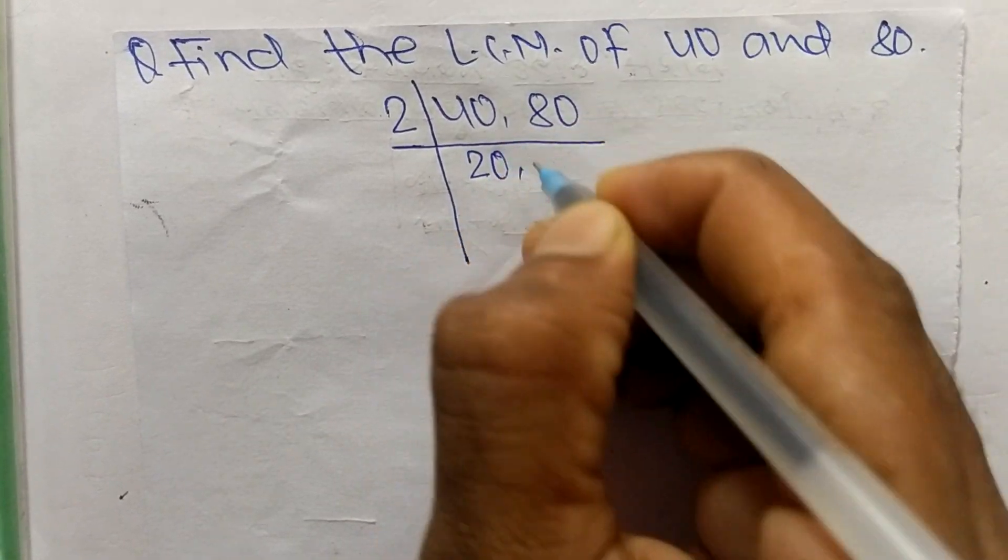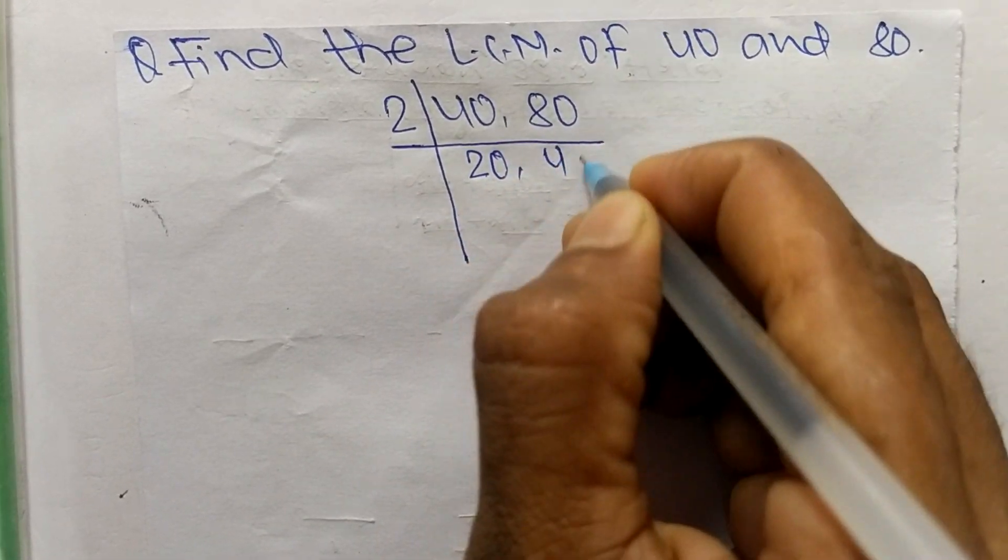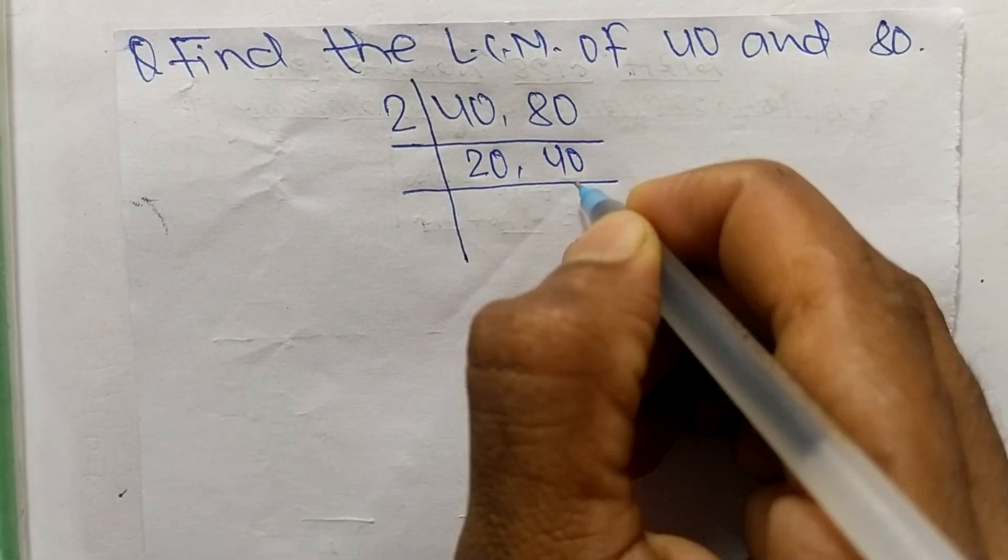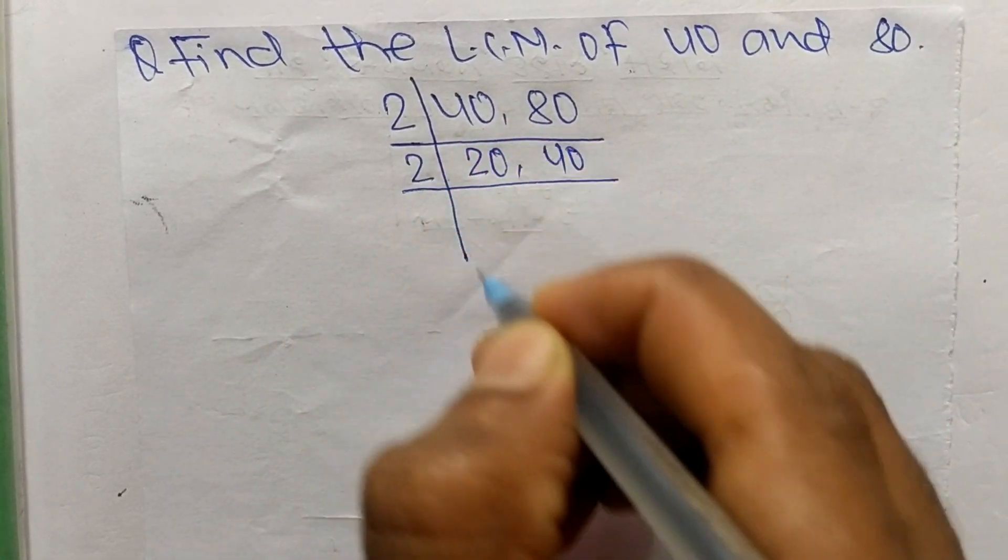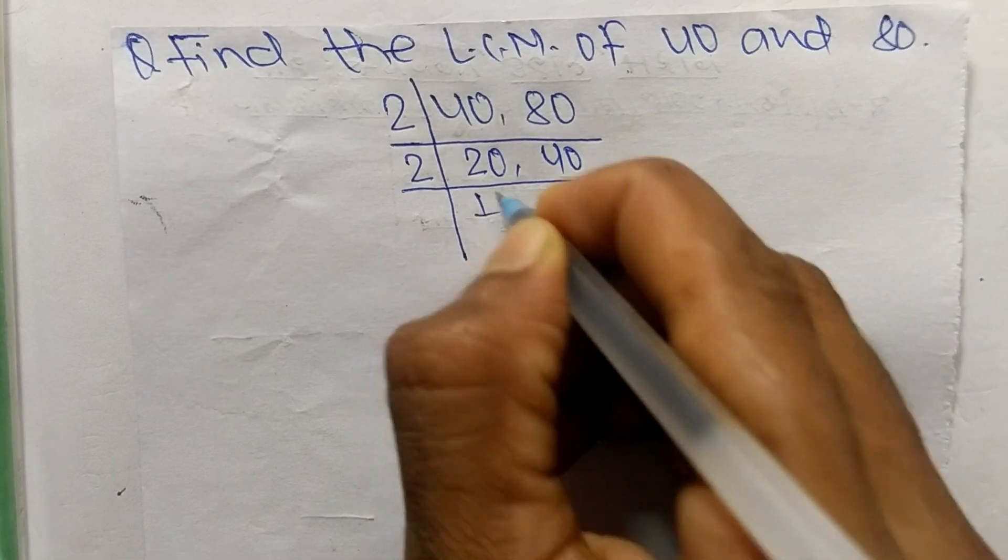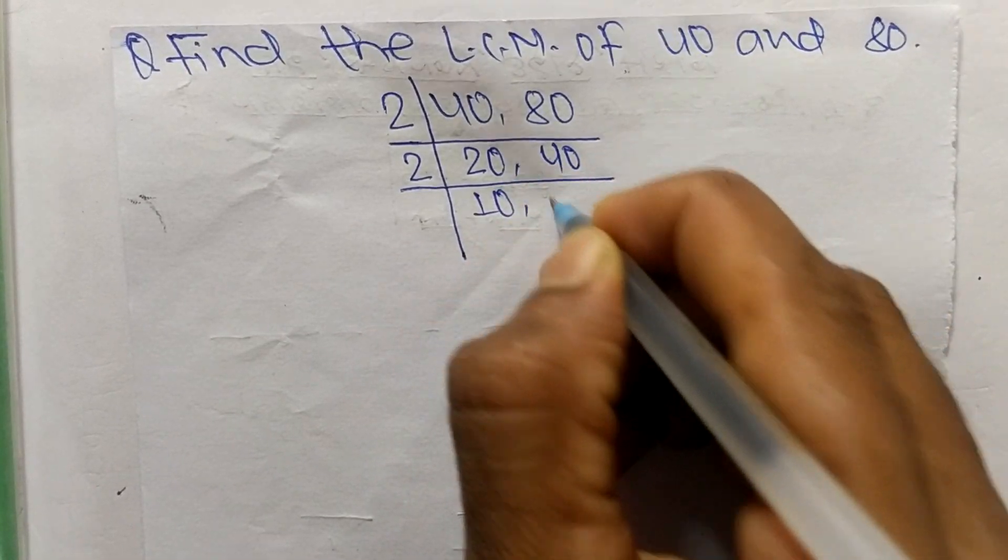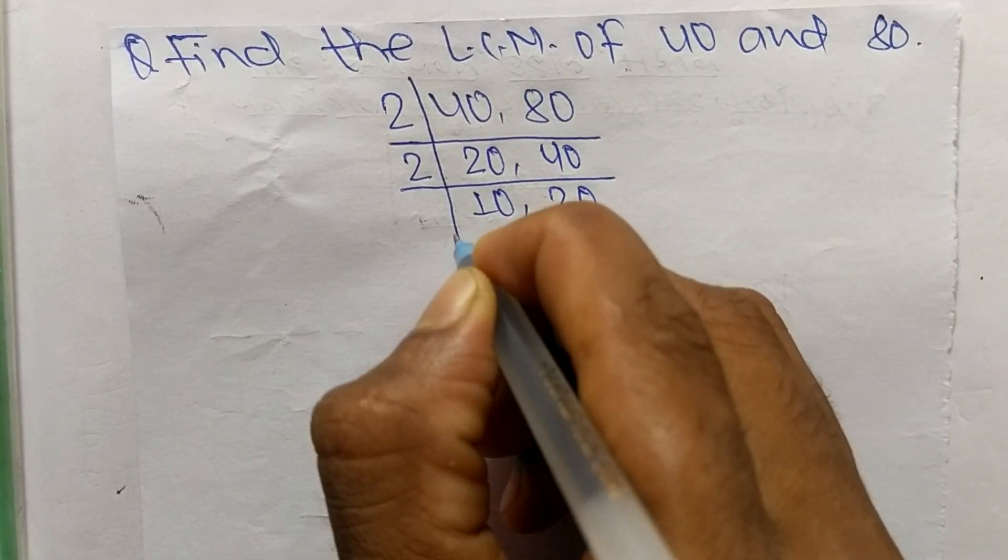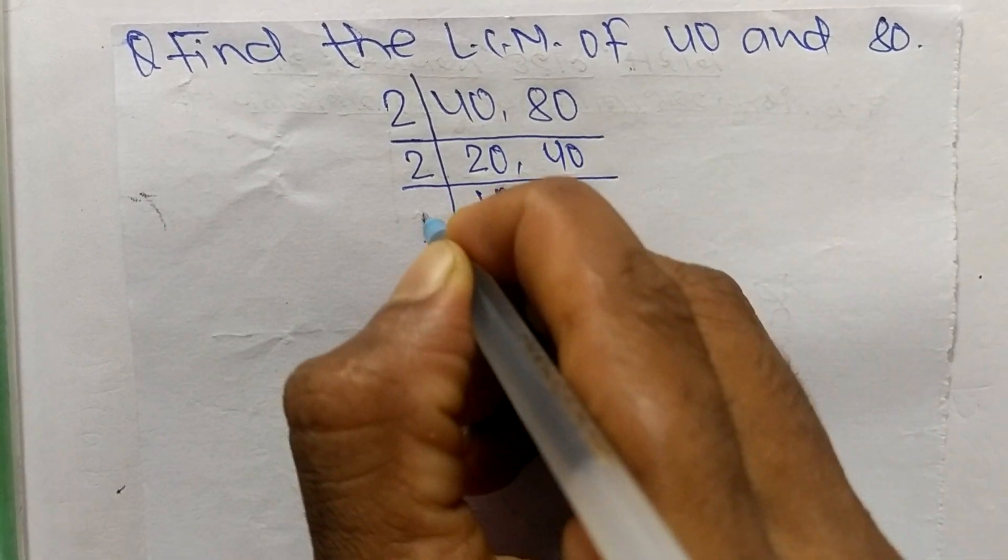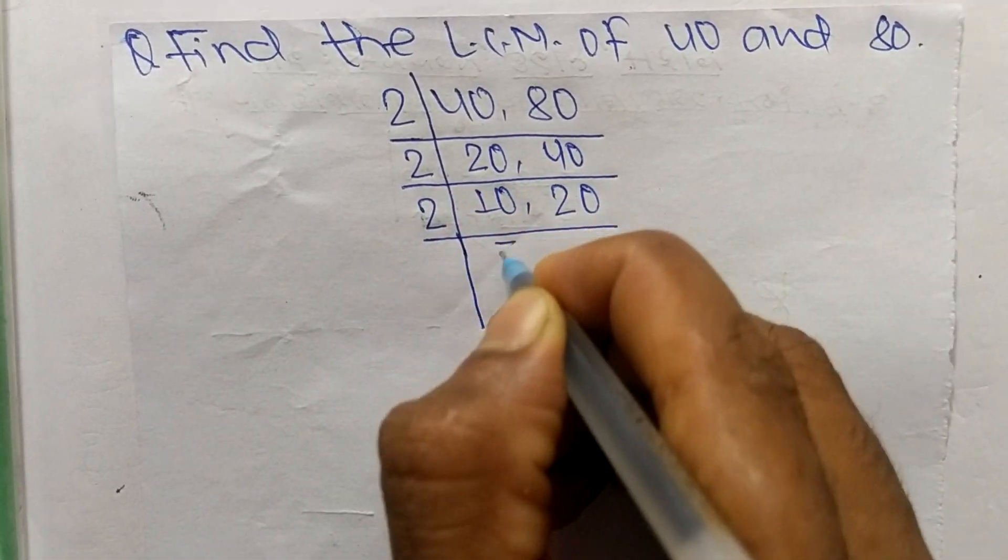Again these both are divisible by 2. So 2 times 10 mean 20, 2 times 20 mean 40. Again it is divisible by 2. So 2 times 5 mean 10 and 2 times 10 mean 20.